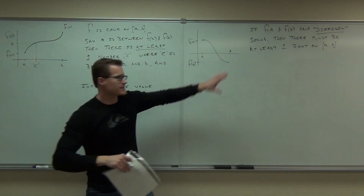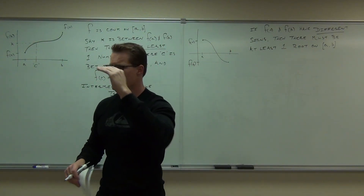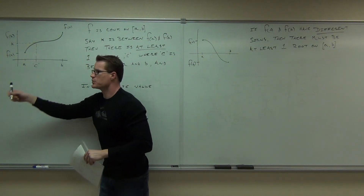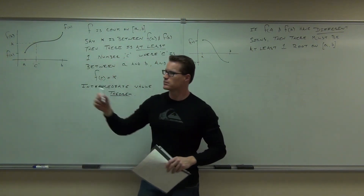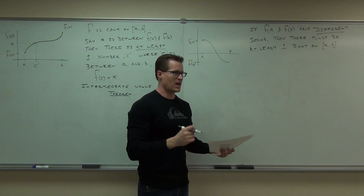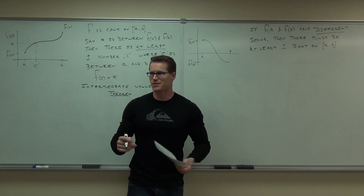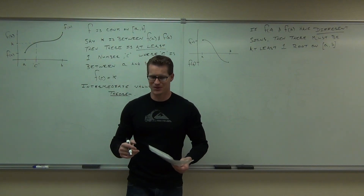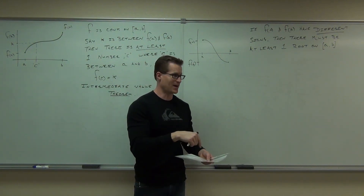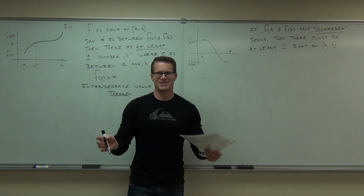That's all it says — it's just a very specific case where your signs are different and you know zero is between them. You can say for any output you can give me a specific input on that interval. Would you like to see it in application? Of course, we have calculators now, but let's say all calculators broke — then we'd have to do it the long way.